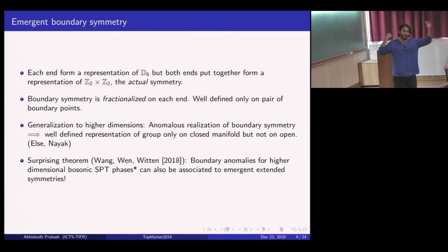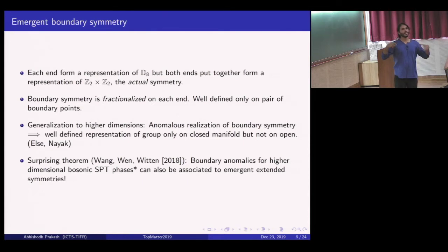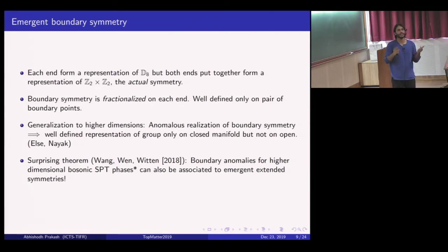If you open up the boundary—consider a single point in one dimension or an interval in higher dimensions—the symmetry is no longer a good representation of the original symmetry. A surprising theorem proved by Wong, Wen and Witten showed that even in higher dimensions, this anomalous realization of symmetry could be ascribed to the emergence of a larger symmetry than the original symmetry. The phase of matter, the boundary anomaly, the original global symmetry, and the emergent symmetry are all intimately connected—exactly as in one plus one dimension.